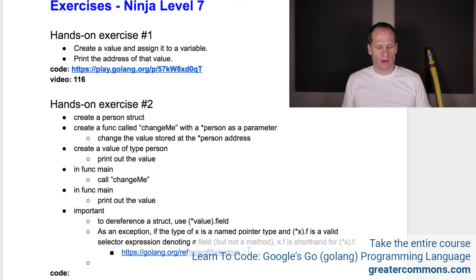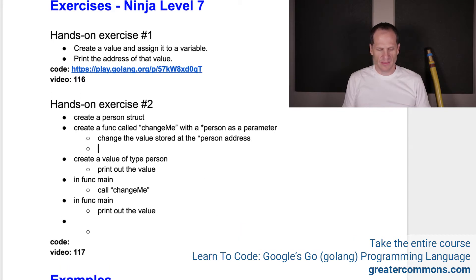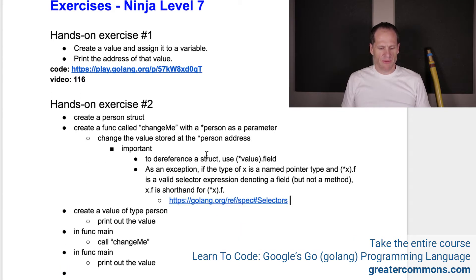And here's the important part right here. So to dereference a struct. To dereference a struct, use the pointer to the value with parentheses around it saying, hey, I want this to be dereferenced, and then the field. And then this is from the language specification that you could actually do it with just x.f, and it figures it out for you. I'll show you that in the solution. So if you try the solution and it's like, what? Can't quite get that.